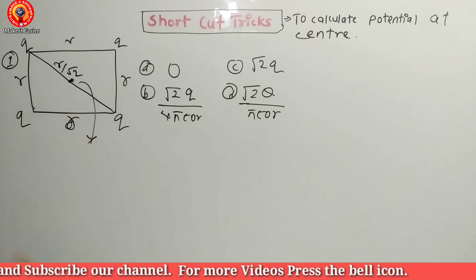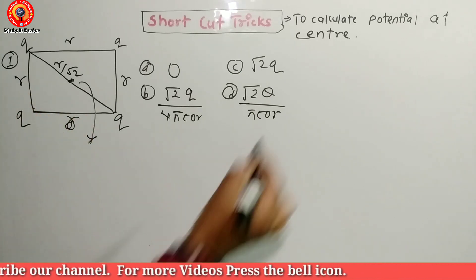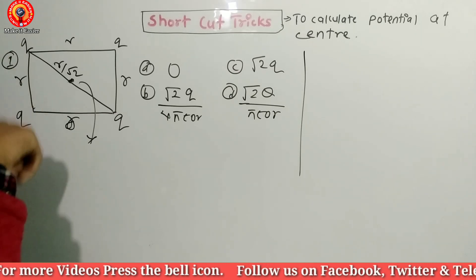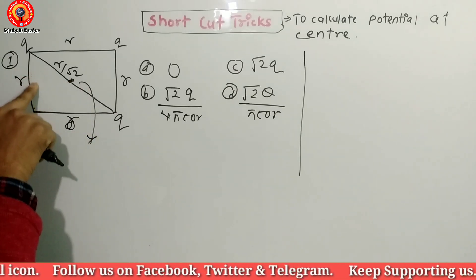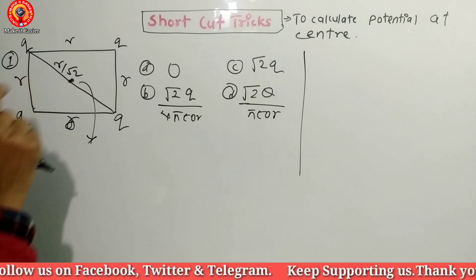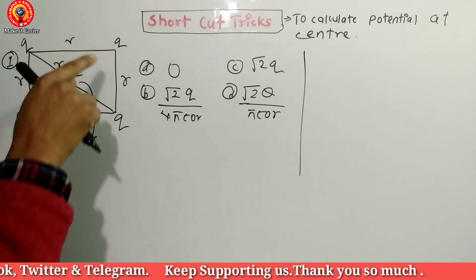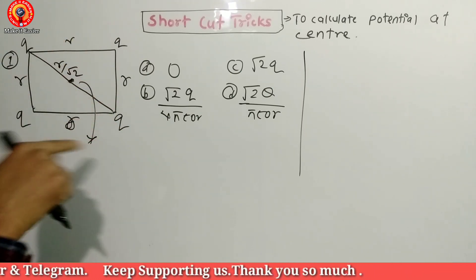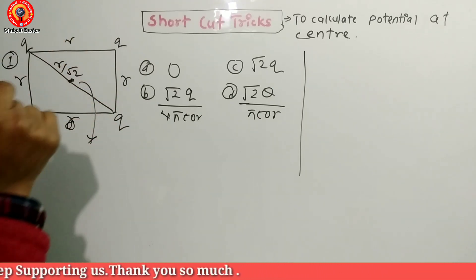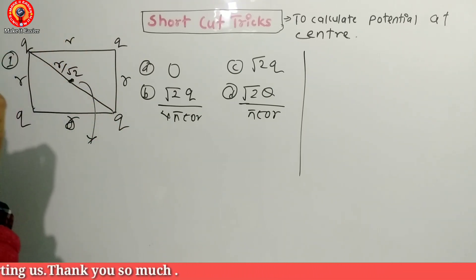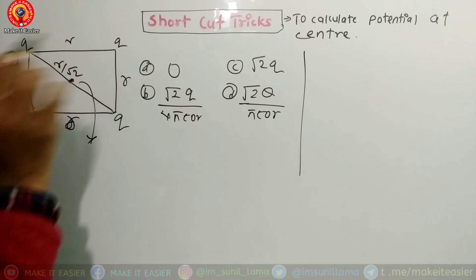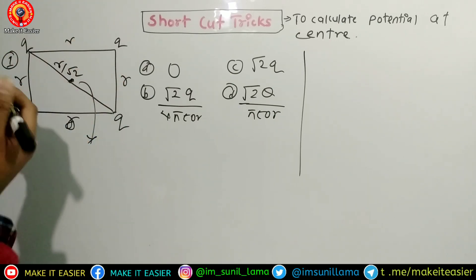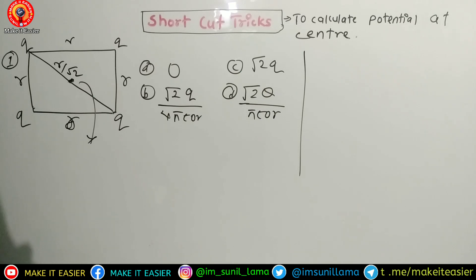Now we are going to start with the question. The structure is a square — all distances and corner side lengths are the same. The charges at the corners are of the same nature, but we are going to start with the opposite nature case.